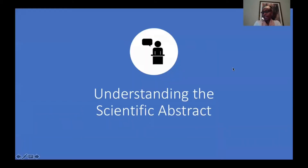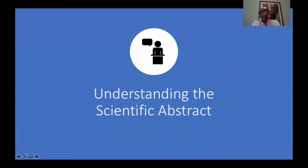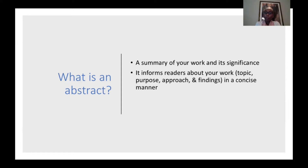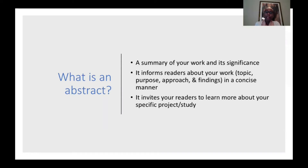Whenever my students, mentees, or trainees are planning to write something, I always tell them the same thing: make sure you understand the assignment. In other words, what are you being asked to do? So what is an abstract? An abstract is a summary of your work and its significance. It informs readers about your work — the topic, the purpose, the approach, and some findings — but it does this in a concise manner. An abstract invites your readers to learn more about your specific project or study.